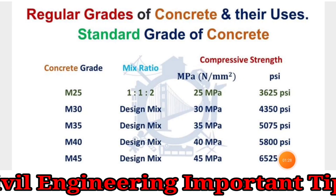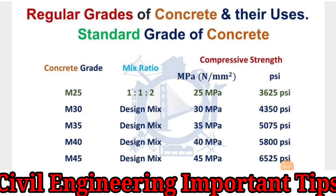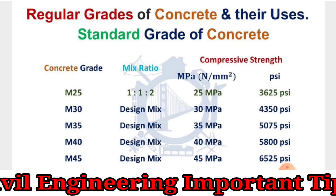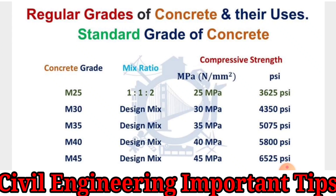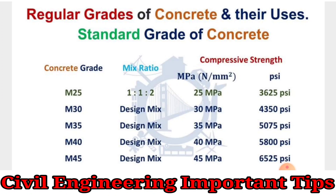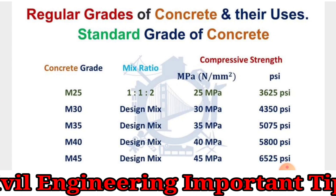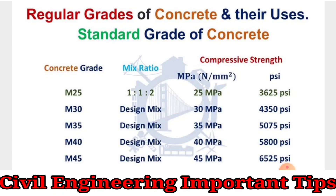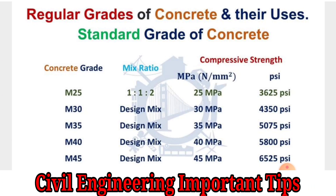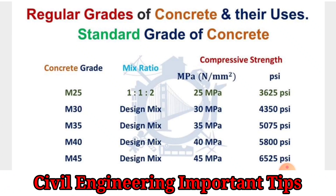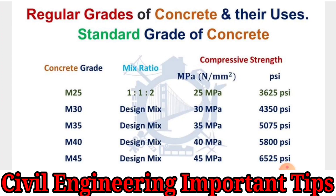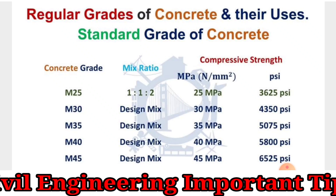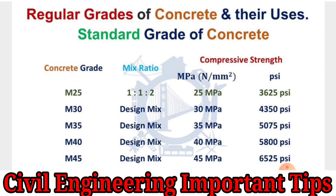Now let's talk about standard grade of concrete and their usage. Standard grades range from M25 to M45. For M25, the mix design ratio is 1:1:2, and its compressive strength at 28 days is 25 MPa.